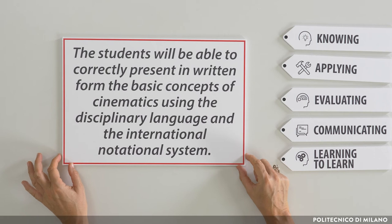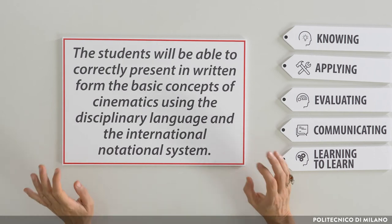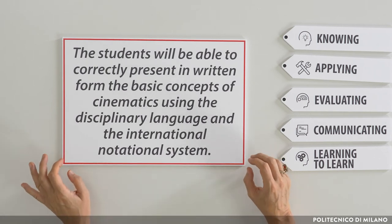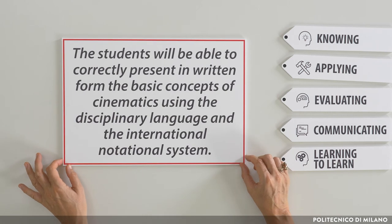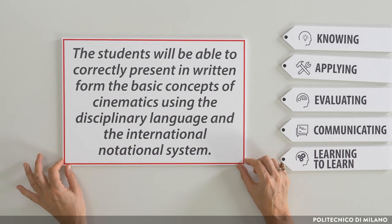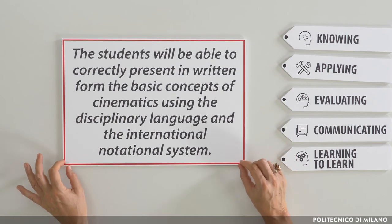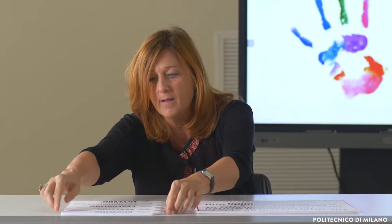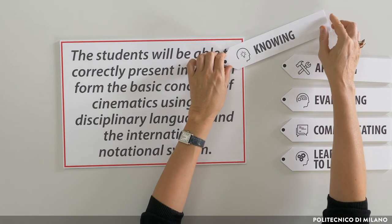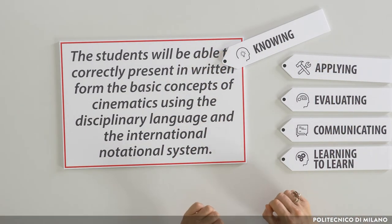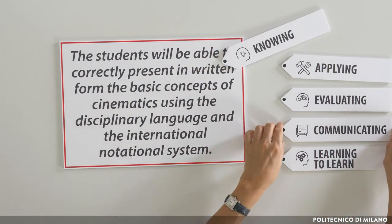For example, let's have a look at this learning outcome: 'The students will be able to correctly present in written form the basic concepts of cinematics using the disciplinary language and the international notational system.' In this case, we can label this learning outcome with descriptor number 1, knowing, and also with descriptor number 4, communicating.